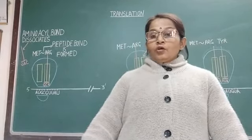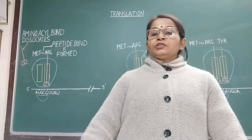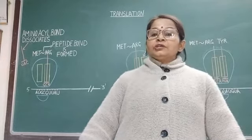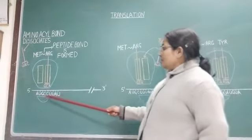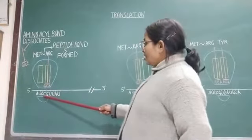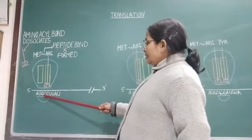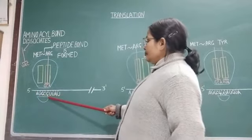A site now becomes vacant to receive the fresh charged tRNA. So, here in the diagram, according to the codons present after AUG, the codons are CGU. So, the tRNA having anticodon GCA which carries arginine now comes over the A site.